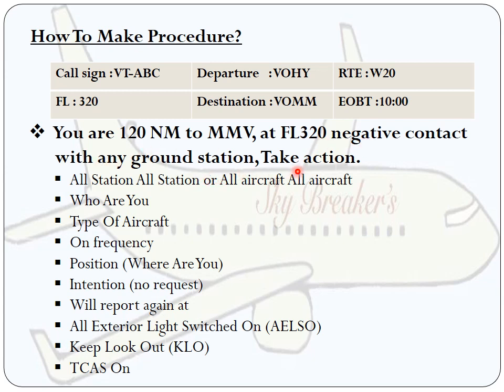When there is negative contact with any ground station, in this order you need to make the procedures and write for the exam. First is 'All stations, all stations' or 'All aircraft, all aircraft.' We call this because the other aircraft can monitor.